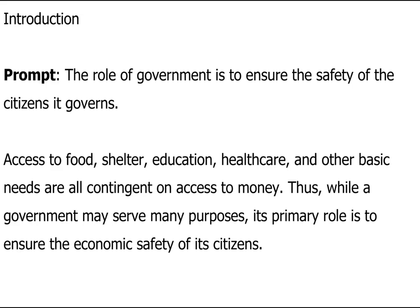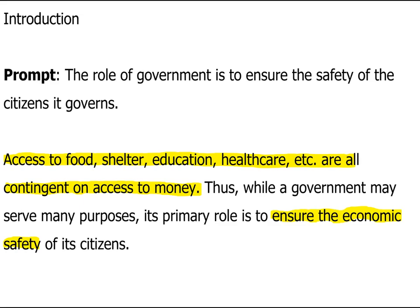So this one is really short and sweet. 'Access to food, shelter, education, health care, and other basic needs are all contingent on access to money. Thus, while a government may serve many purposes, its primary role is to ensure the economic safety of its citizens.' This thesis works great, and it really is only two sentences. Also, in the highlighted portion, you can see that the writer has made clear that the scope will be narrowed to discussing safety in terms of the economy.